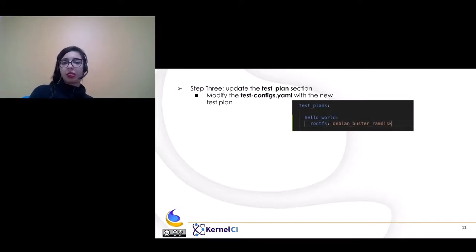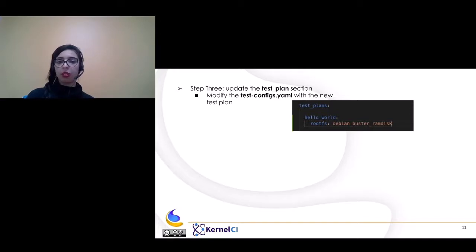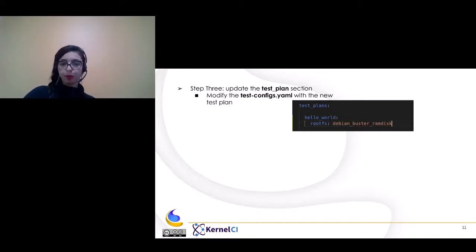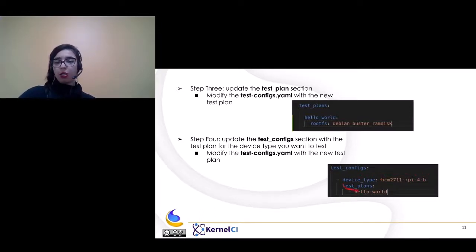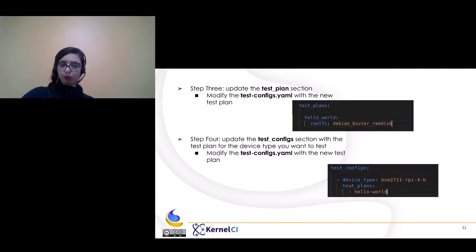The third step is to modify the test.config.yaml file. Go to the test plan section and add your new test plan, naming it "hello world". Since we are using a prebuilt rootfs image, you insert the one you want to use — the Debian Buster ramdisk, one of the basic rootfs images. The fourth step is to update the test config section in the same test.config.yaml file, to use the test plan added earlier, assuming you're using a Raspberry Pi 4 as the device with the hello world test plan.